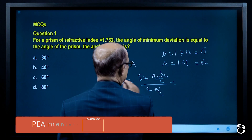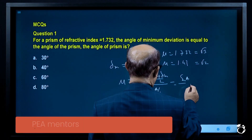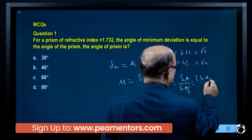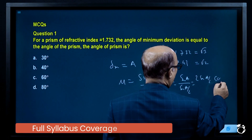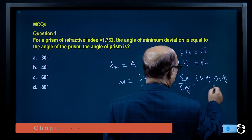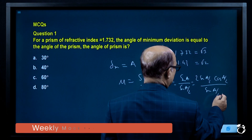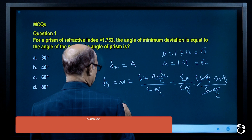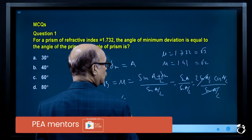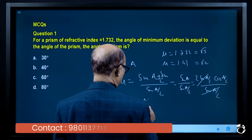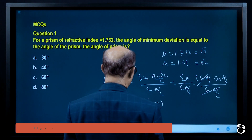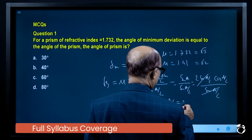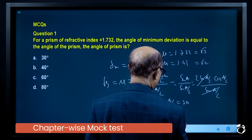Since δm = A, we get sin(A) in the numerator. Expanding: sin(A) = 2·sin(A/2)·cos(A/2). The sin(A/2) cancels, so μ = 2·cos(A/2). Therefore root 3 = 2·cos(A/2), giving cos(A/2) = root 3 / 2. So A/2 = 30 degrees, and A = 60 degrees.